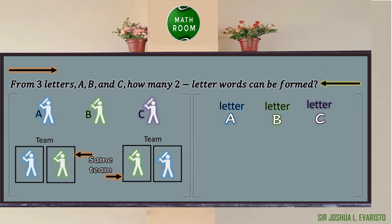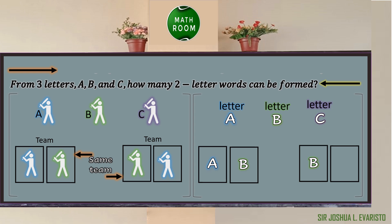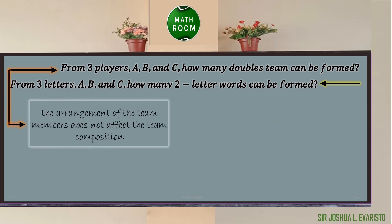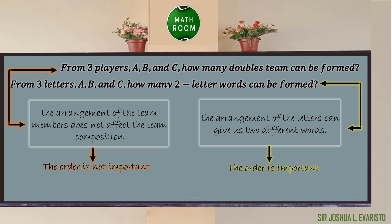For question number two, given three letters A, B, and C, we will form two-letter words. If we choose A first followed by B, does it make any difference if we choose letter B first followed by letter A? Of course — the word AB is not the same as the word BA. What makes the two questions different? For the first one, the arrangement of team members does not affect the team composition, so the order of the players is not important. However, on the second one, the arrangement of letters can give us two different words, so the order is important. The first question is solved using combination, while the second is solved using permutation.